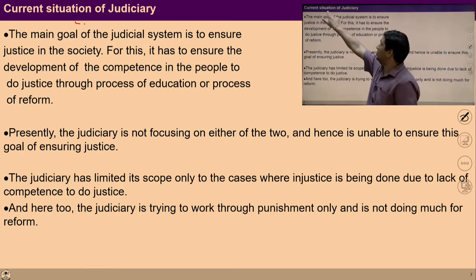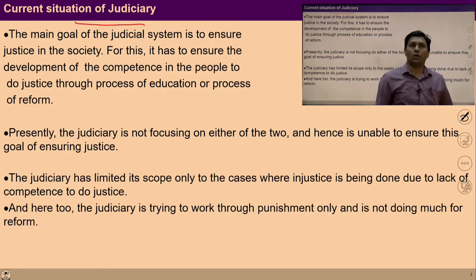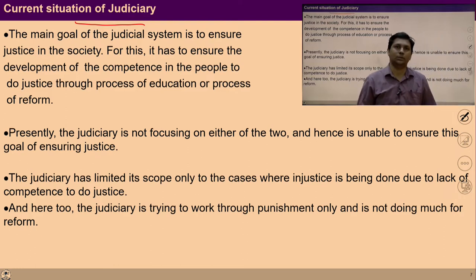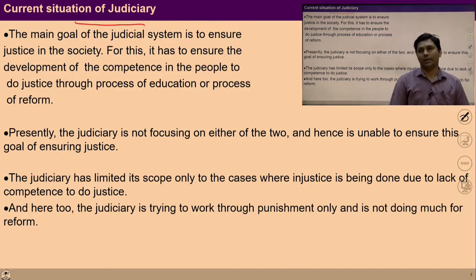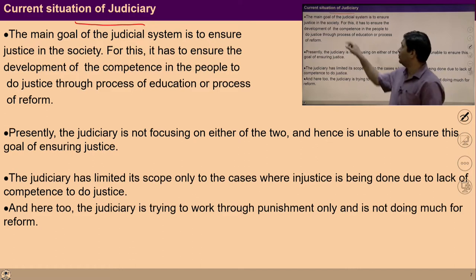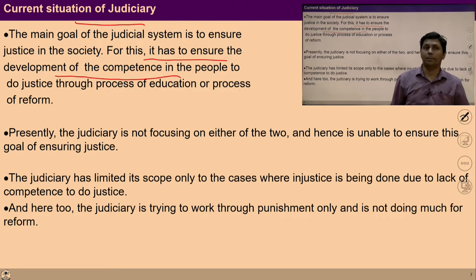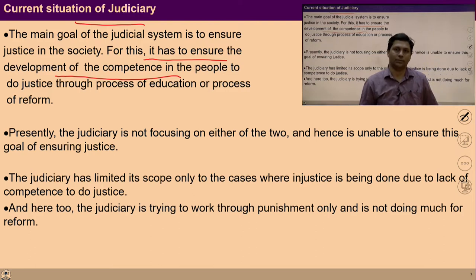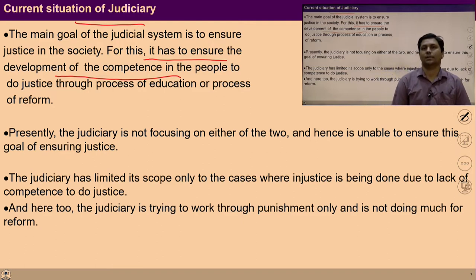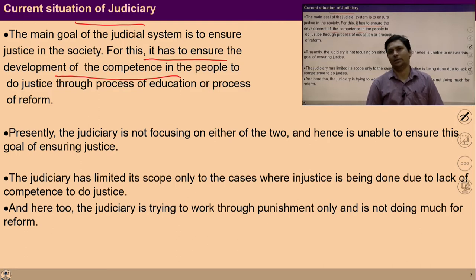If you see the current state of the judiciary, the main goal of the judicial system is to ensure justice in society. Definitely one of the main goals is to ensure justice everywhere. For this, there is a need to ensure the development of competence in people to do justice through the process of education, where we can facilitate the process of self-exploration, self-investigation, and make them aware about the self and values. All this is the responsibility of this judiciary system.